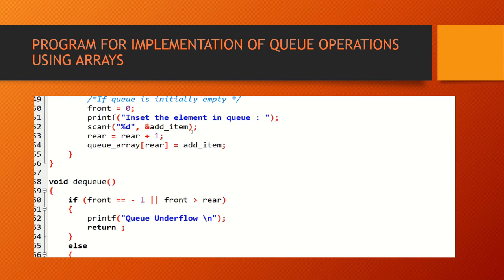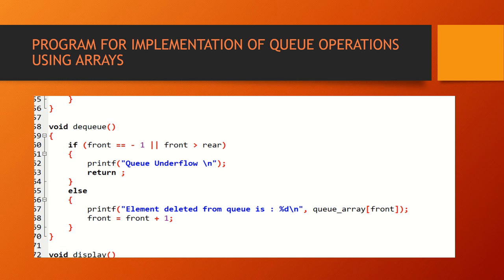Next is voidDequeue — the deletion operation. If front equals minus 1, the queue is empty, so we can't delete any elements. Otherwise it jumps to the else statement and prints the element deleted from the queue, which is queue array of front. The deletion is from front, so the front element is deleted first. front equals front plus 1 — the index value increases. The element is successfully deleted.